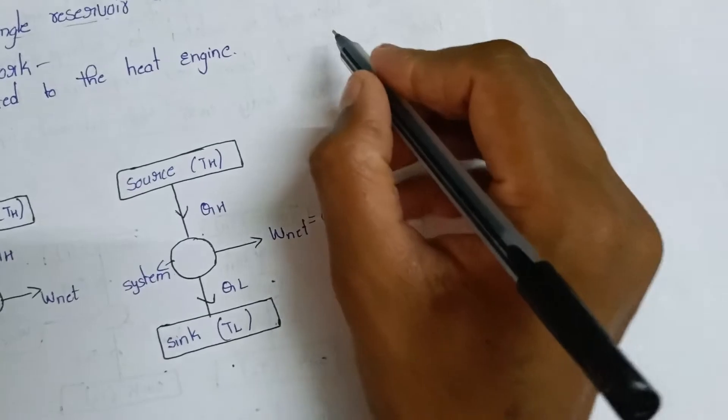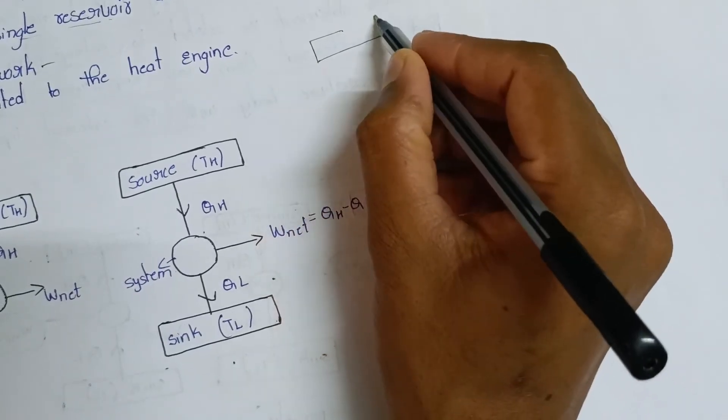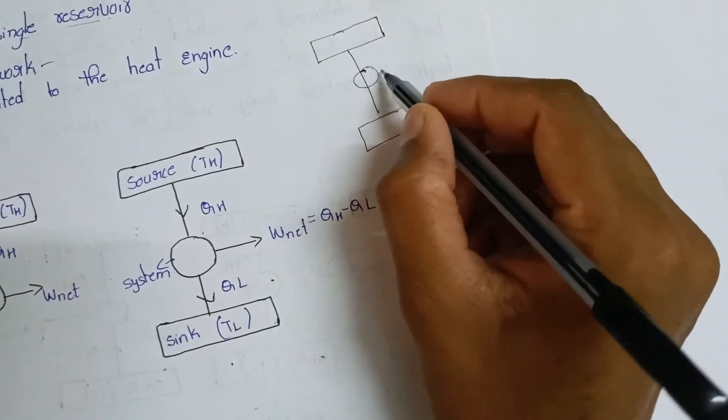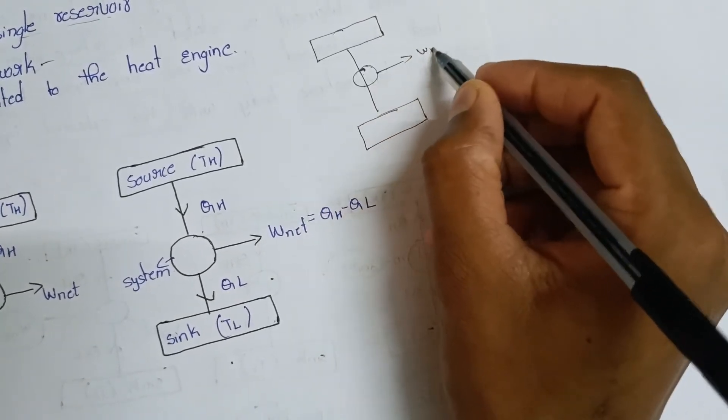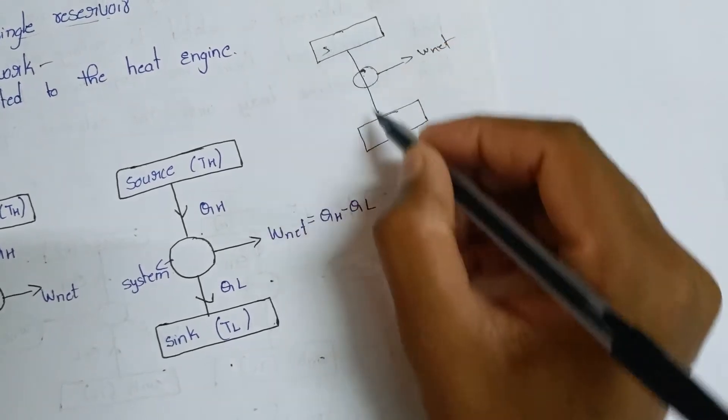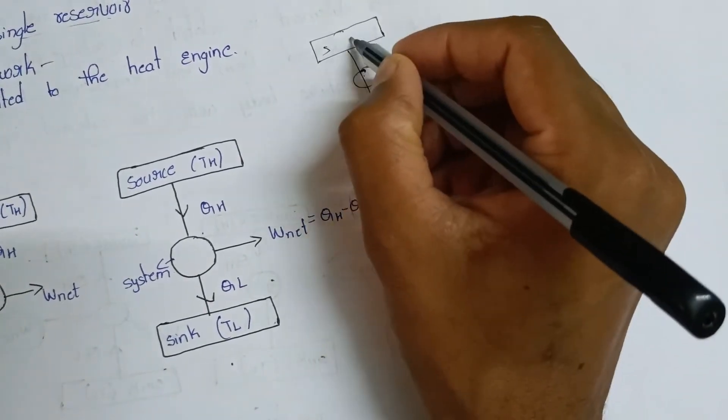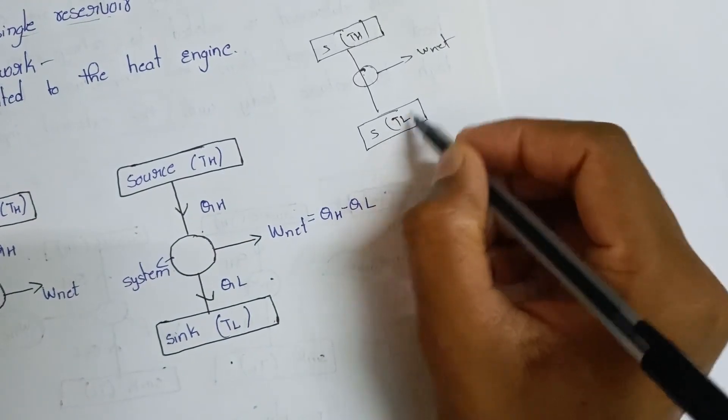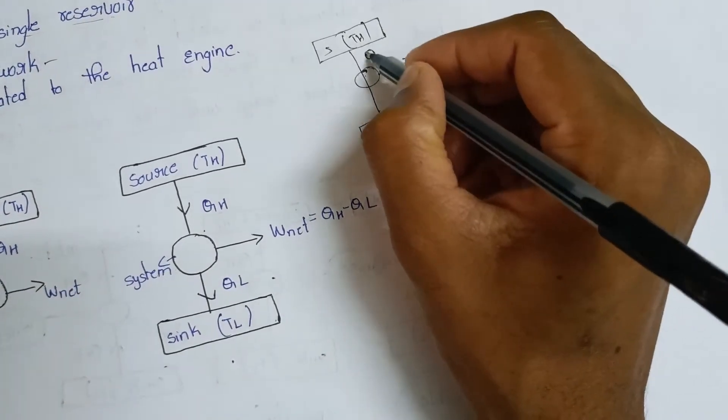There are two main divisions: source and sink. The source is at high temperature and the sink is at low temperature. Heat is applied from the source.